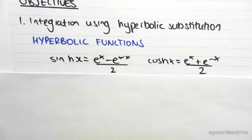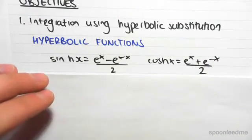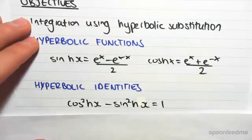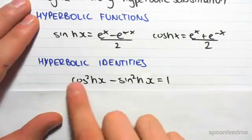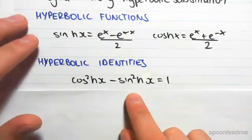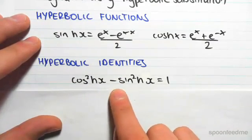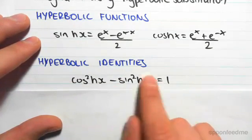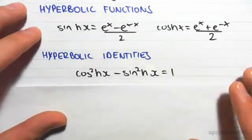So we saw some examples using these hyperbolic functions in a previous topic. Now an important hyperbolic identity, which is going to come in handy when we do integration, is cosh squared x minus sinh squared x equals 1. That's just an important identity.